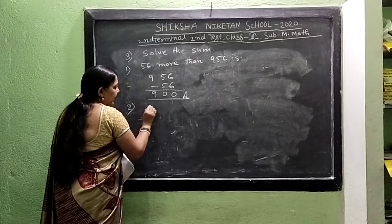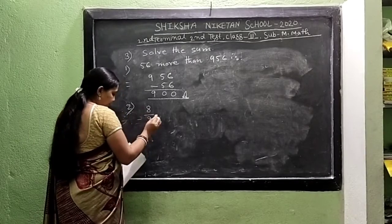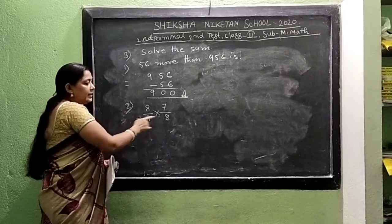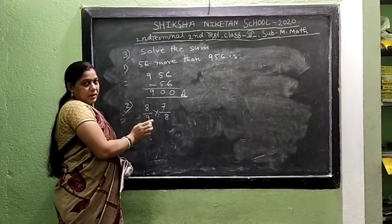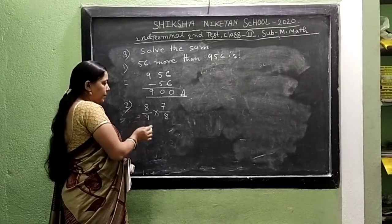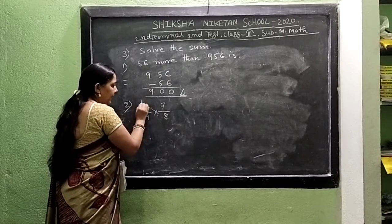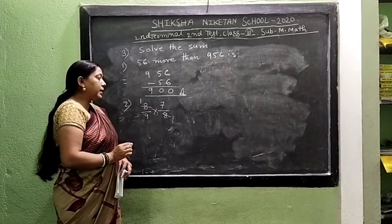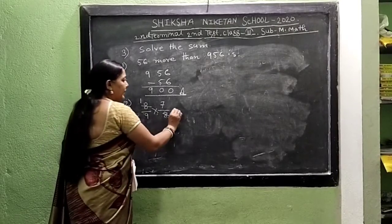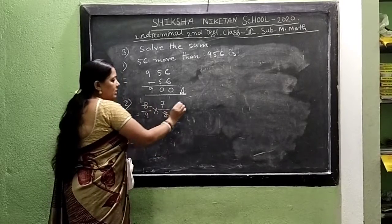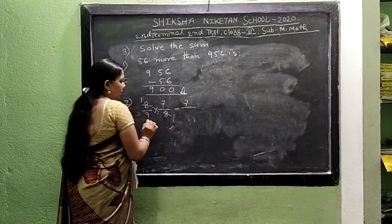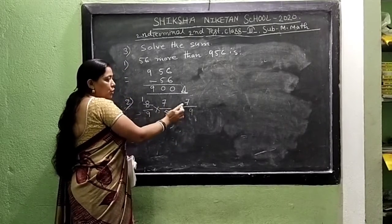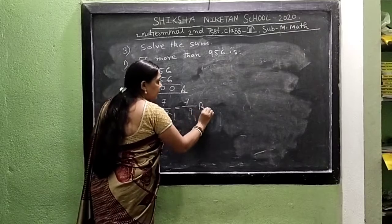Next math is 8/9 multiplied by 7/8. In this type of math we cancel the same numbers. 8 in the numerator and 8 in the denominator cancel out. But 7 and 9 never cancel. So we write the remaining: multiply 7 by 9. 7 is less than 9, so the answer is 7/9.